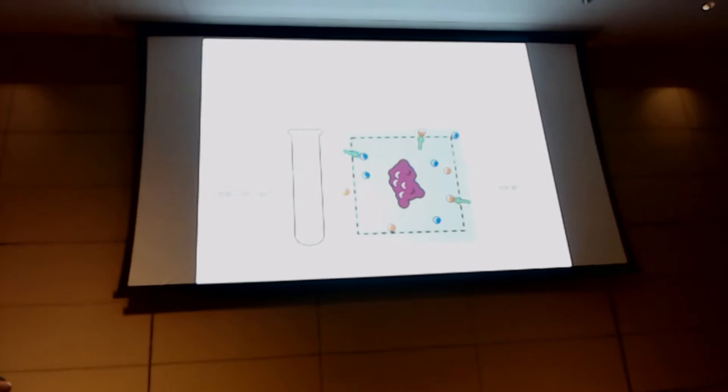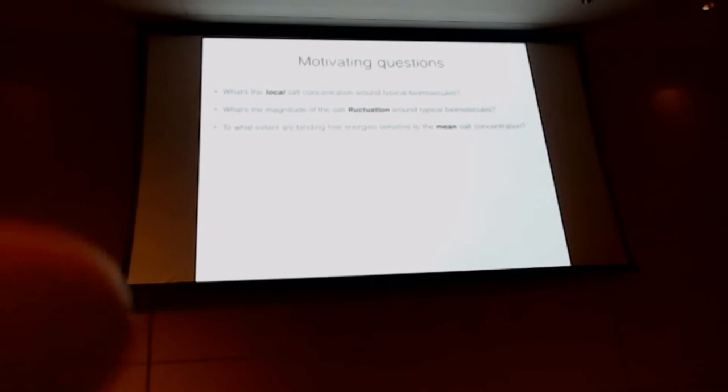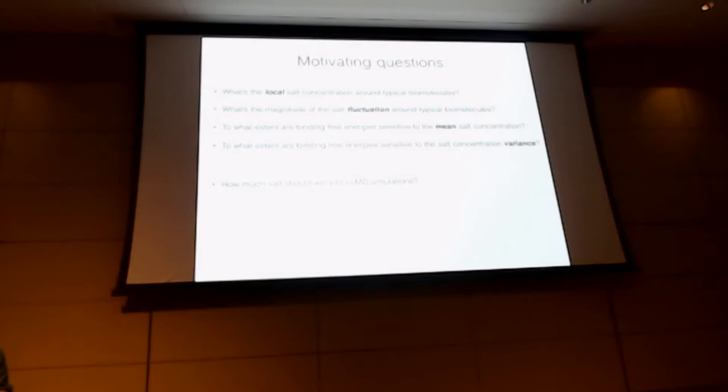So with this in mind, we have some motivating questions that we wanted to address with simulations. First off, what's the mean salt concentration around a typical biomolecule? Secondly, what is the degree of fluctuation of salt around a biomolecule? And thirdly, to what extent are binding free energies dependent on the mean salt concentration? To what extent are they dependent on the variance of the salt concentration? And perhaps more practically, how much salt should we add when we're doing relative free energy simulations or free energy calculations? And it's probably worth saying that different simulation packages have a totally different way of dealing with salt. So what is the best? If we could know the answer, what's the best way to add salt?